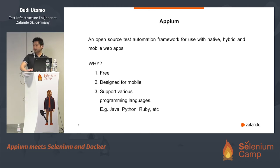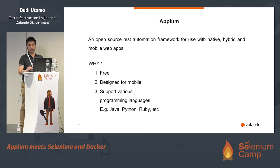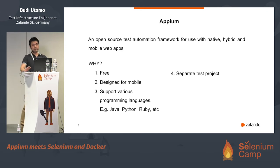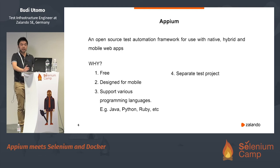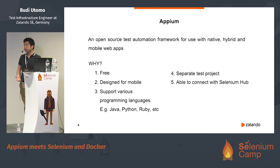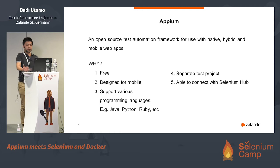Appium supports different programming languages like Java, Python, and Ruby — so there are no programming language boundaries. If you code in Java, you can start with Java; if you code in Python, you can start with Python. And you can work in a separate test project. Like Espresso, which requires you to work in the same project where the developer works — meaning you have more dependency on the developer and they need to approve your pull requests. But with Appium you can start it right away. It's also able to connect with Selenium Hub so you can manage everything in one single hub.